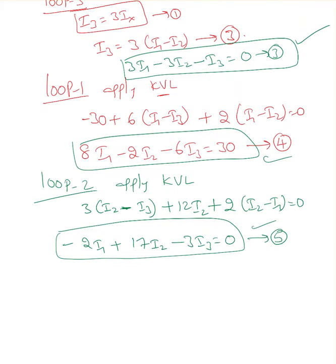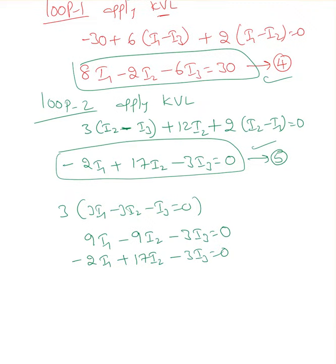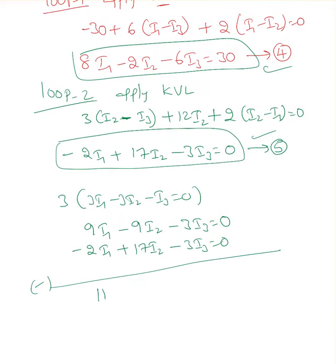I'm going to multiply equation 3 by 3: 3 times (3I1 minus 3I2 minus I3) equals 0, giving 9I1 minus 9I2 minus 3I3 equals 0. Subtracting this from equation 5 (minus 2I1 plus 17I2 minus 3I3 equals 0) to eliminate I3: 11I1 minus 26I2 equals 0. I3 is eliminated.